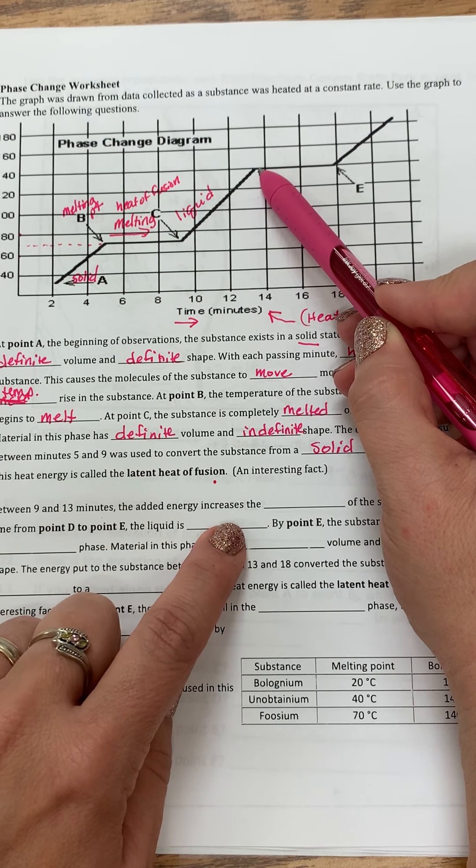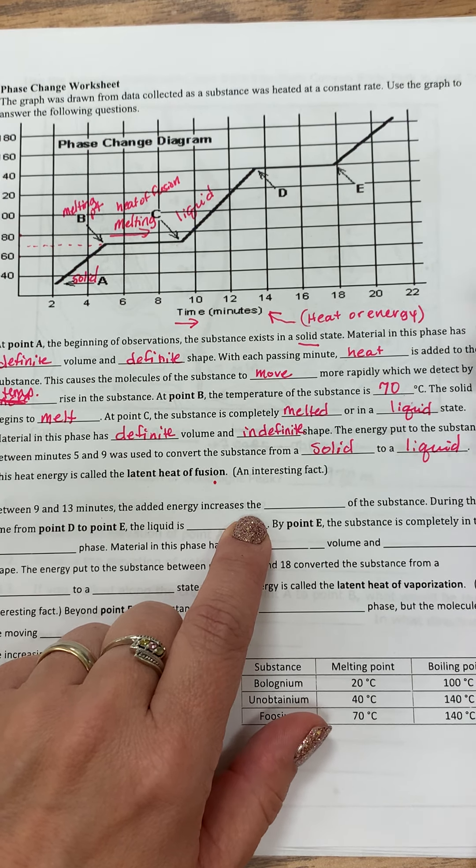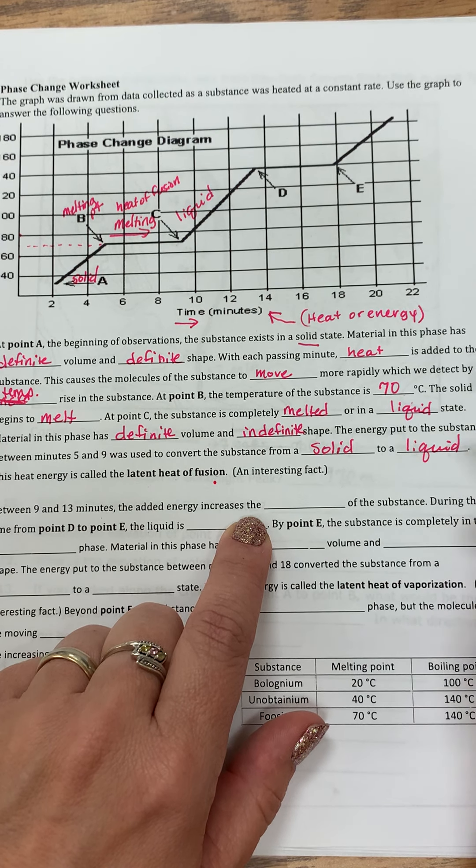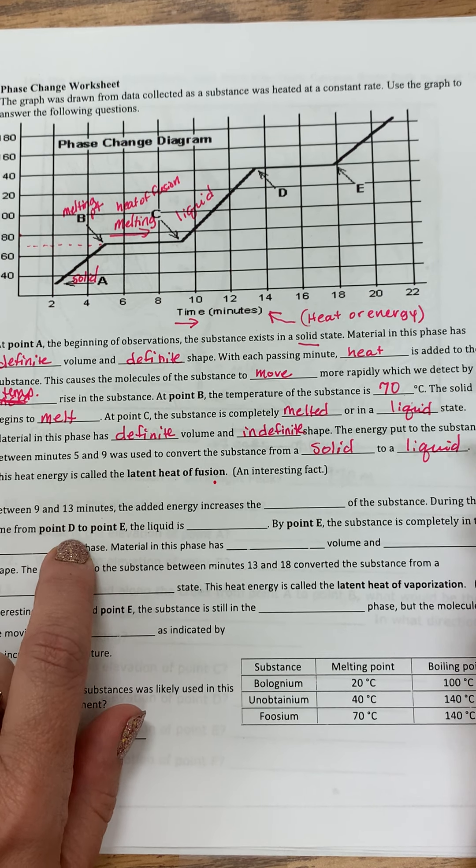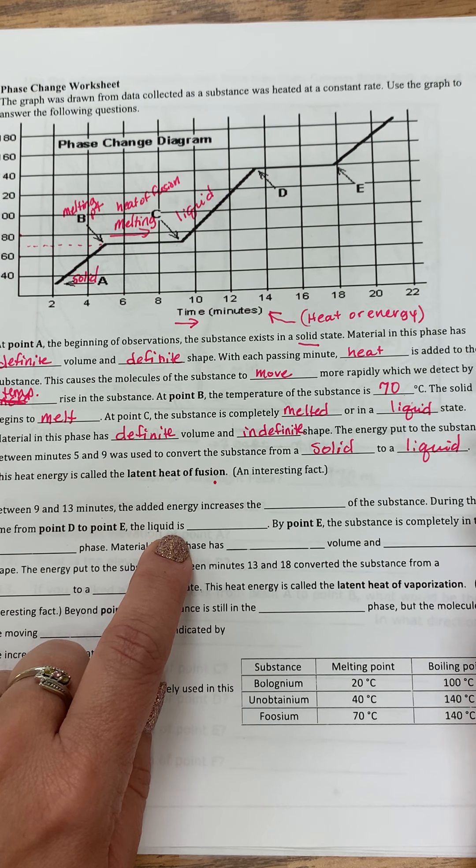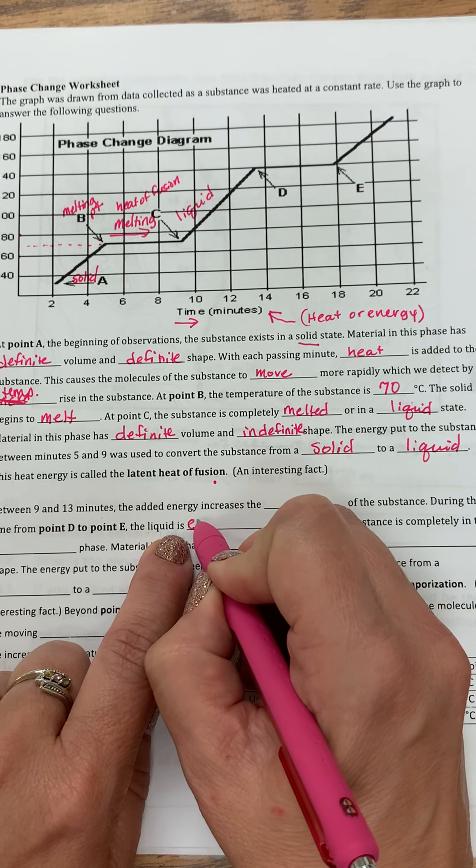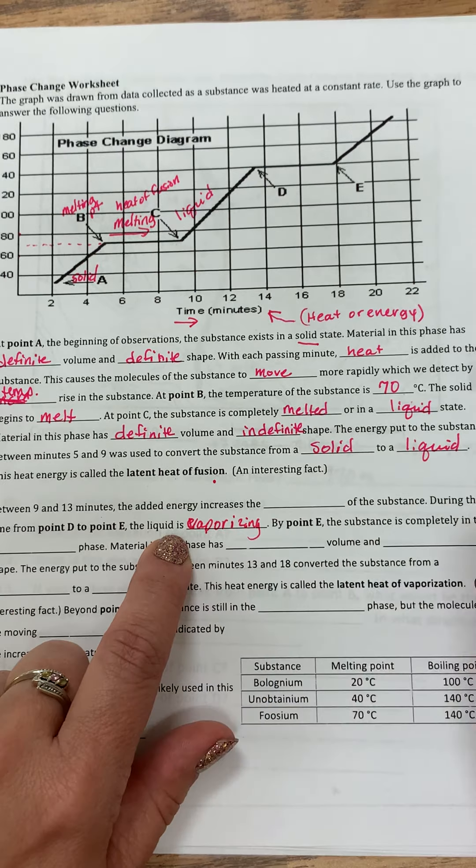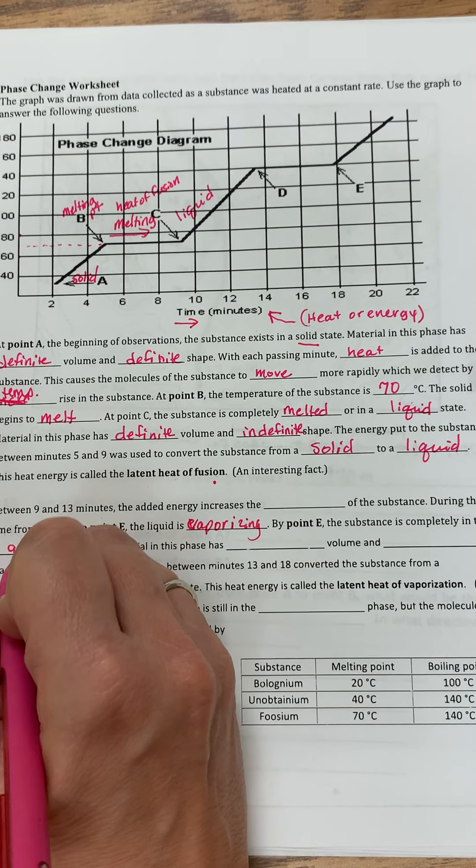Between nine and 13, which is this increase here, the added energy increases the movement of the substance. During the time from point D to point E, the liquid is, I want to say it's evaporating or vaporization, I think is what it's called. Vaporizing.